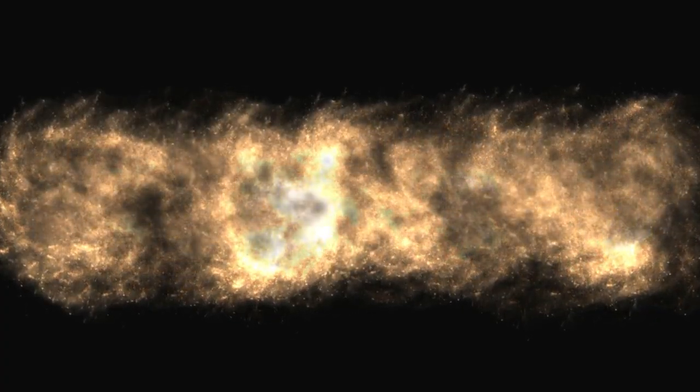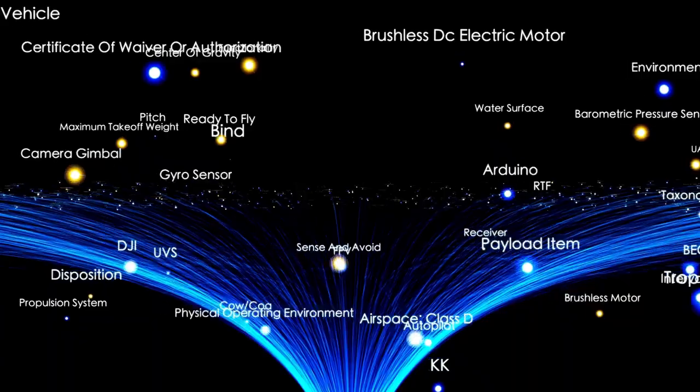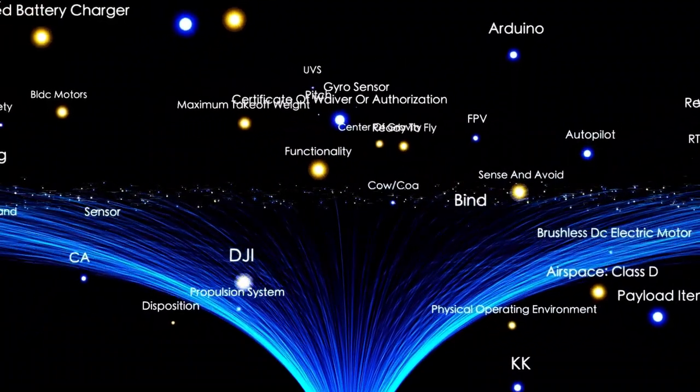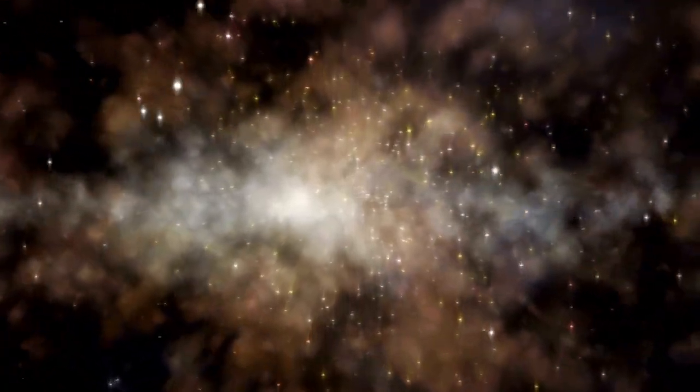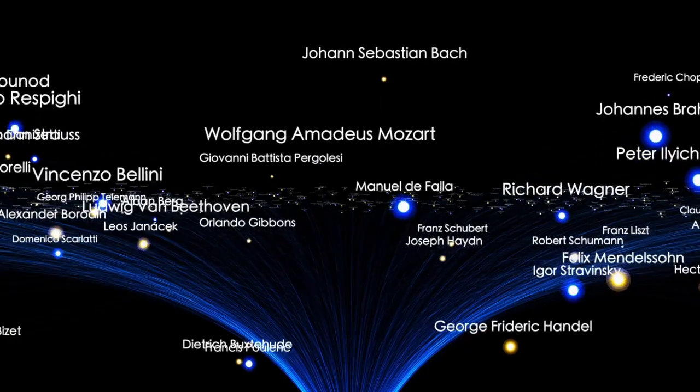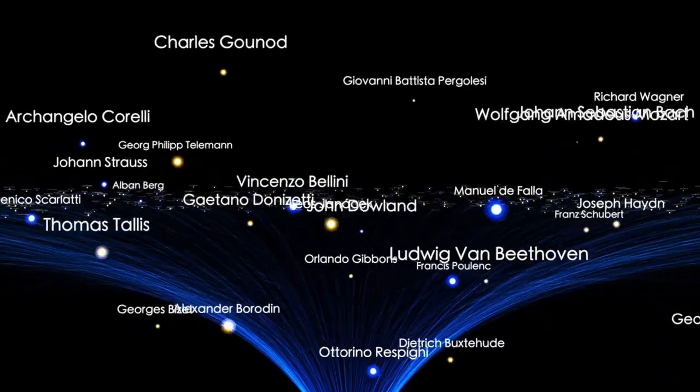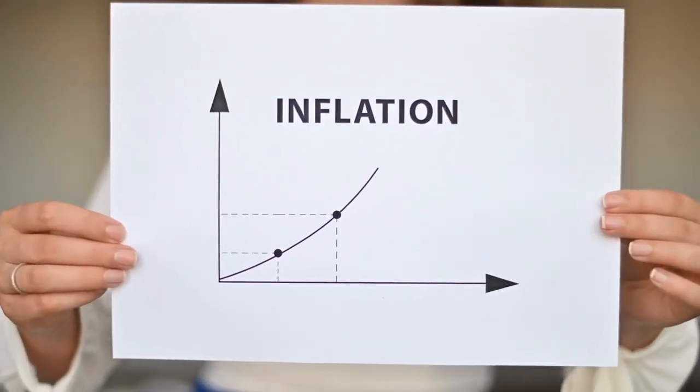In a recent deep field composite, scientists noticed something astonishing. A galaxy with an unexpectedly mature structure. Unlike the chaotic shapes typical of early galaxies, this one displayed clear spiral arms, order and symmetry, features thought impossible so early in cosmic history. This discovery is prompting researchers to rethink galaxy formation models entirely.